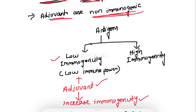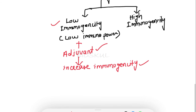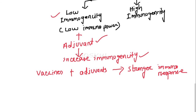Adjuvants are non-immunogenic compounds but they have the power to increase the immunogenicity of antigens. Adjuvants are used as ingredients in some vaccines to create a stronger immune response in people. Adjuvants help vaccines work better.